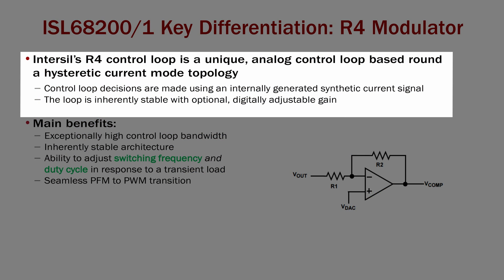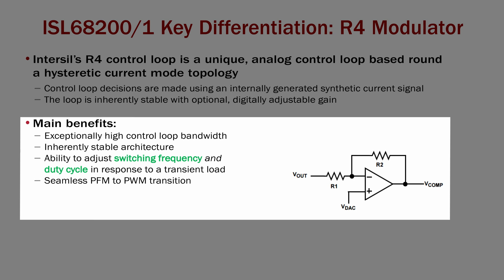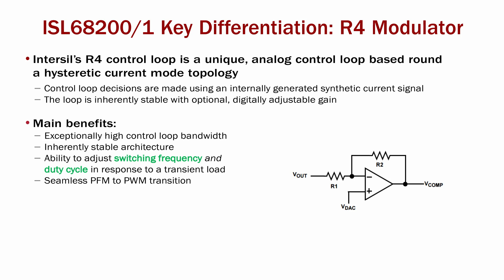Intersil's R4 control loop is based on current mode hysteretic control. The loop is inherently stable with digitally adjustable gain through the optional PMBus interface found on the ISL68200 and 68201. The main benefits of this control loop include high control loop bandwidth, inherently stable architecture, the ability to adjust both switching frequency and duty cycle in response to load transient, and the seamless PFM to PWM transition for excellent light load efficiency.